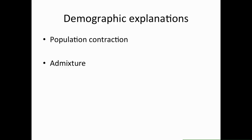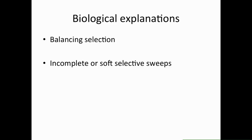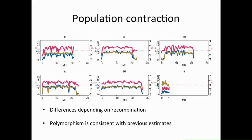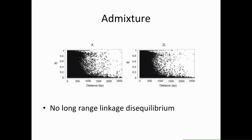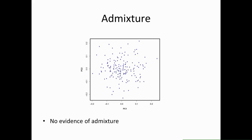There are a couple of potential explanations. Demographic explanations include population contraction or admixture; biological explanations include balancing selection or incomplete/soft selective sweeps. For population contraction, you would expect no differences between regions of low and high recombination — but we see really large differences, and our polymorphism estimates are consistent with previous estimates. For admixture, you would expect long-range linkage disequilibrium from co-inherited admixture regions — but we don't see that. On average, linkage decays within 200 base pairs, consistent with other studies. A principal components analysis also shows no evidence of admixture.